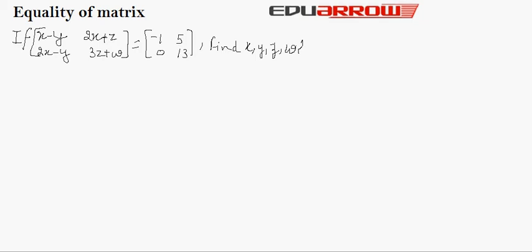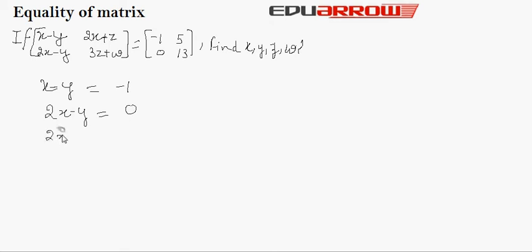Now let us consider an example to understand this concept. In this question, it is given that both matrices are equal, so the corresponding elements will be equal. So x minus y will be equal to minus 1, 2x minus y will be equal to 0, and 2x plus z will be equal to 5.